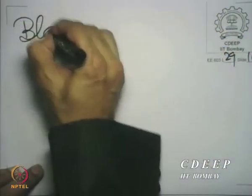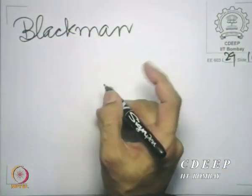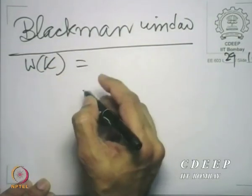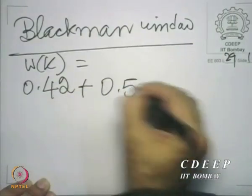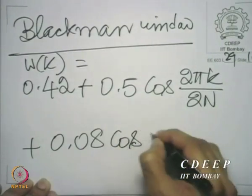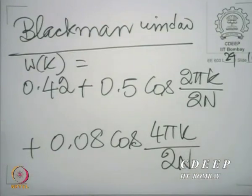You can introduce one more term to achieve further compromise — that is what leads to the Blackman window. Blackman is the name of another researcher. The Blackman window w(k) is described by 0.42 plus 0.5 cos(2πk / 2N) plus 0.08 cos(4πk / 2N). Essentially, a second harmonic term has been introduced. Just as a good dish requires the right proportions of ingredients, a good window requires the right proportion of different harmonics to achieve a good main lobe width and side lobe area compromise.